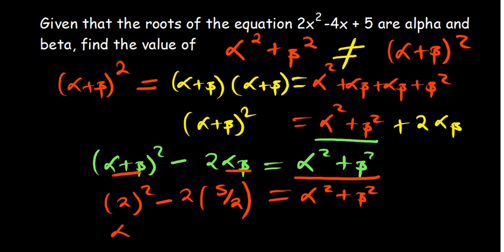So 2² is 4. 2 times 2 will cancel out to remain with 5. And basically this becomes -1, which is equal to α² + β².